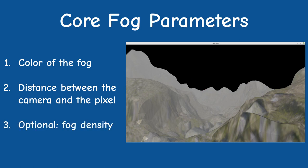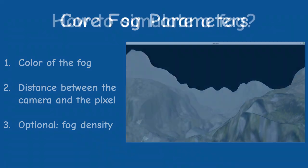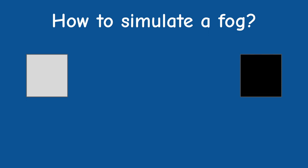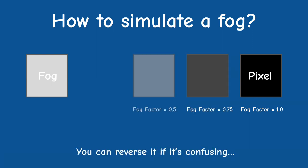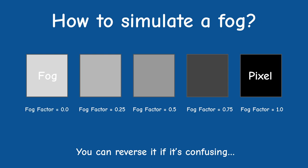The techniques we're going to study are based on the following core parameters: the color of the fog and the distance between the camera and the pixel. Stuff which is closer to the viewer tends to be more visible, and as it goes further away it tends to hide behind the fog. In some techniques we will also use a density factor to help tune the level of fogginess. For real-time graphics we usually need a simplified model, so all techniques are based on blending between the actual pixel color and the color of the fog.